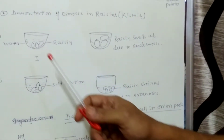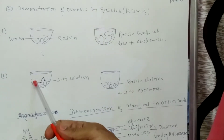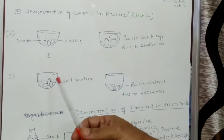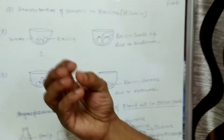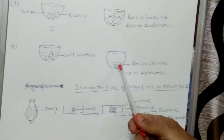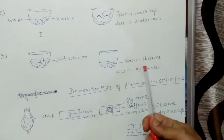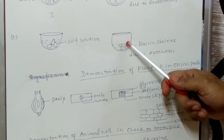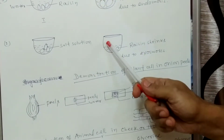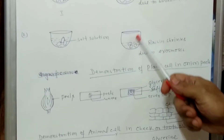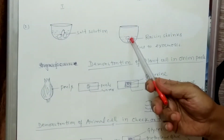Now if we take the raisin and put it in a salt solution instead of water, the raisin will lose water from its body. The raisin loses water and its size will shrink — it becomes smaller. This shrinkage of the raisin is due to the process of exosmosis, meaning water molecules are lost by the raisin. Because outside the raisin there is salt solution, which is highly concentrated — a hypertonic solution — the movement of water takes place from the raisin to outside, and the size of the raisin shrinks. So here we find the process of plasmolysis.